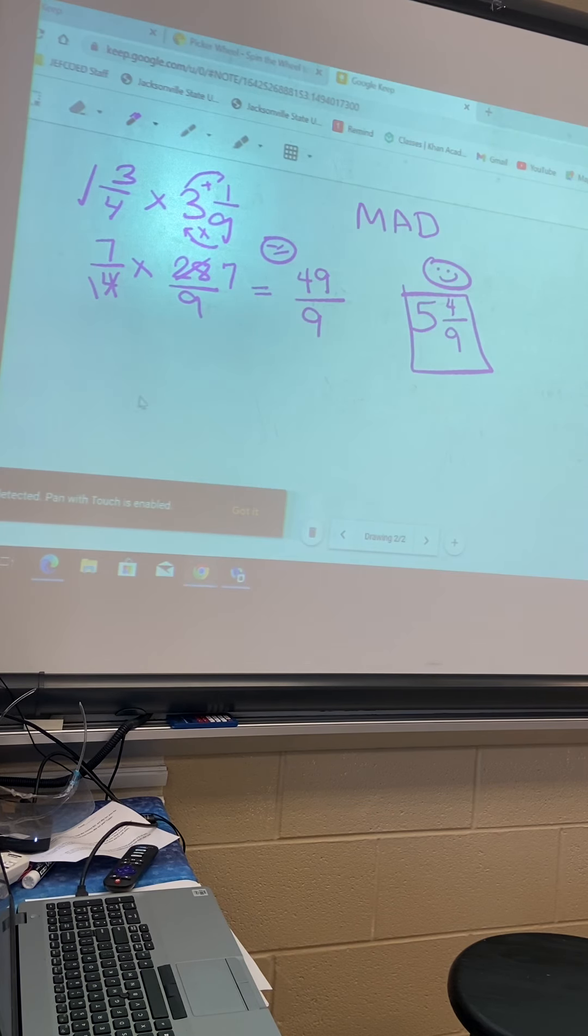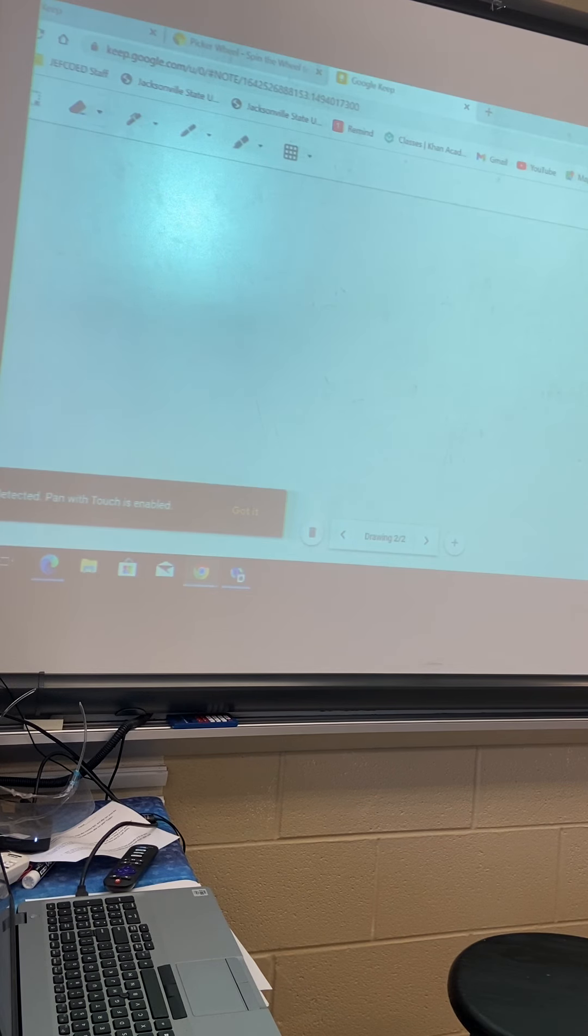Okay? Next question. Can you write that? 9 times 4/6. First of all, I don't like 4/6. Sit down. Sit down. I like 4/6. What can I write instead of 4/6? 2 thirds. 2 thirds. 9 times 2 thirds.